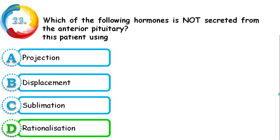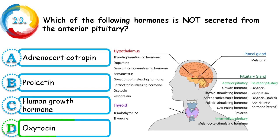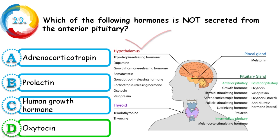Question 23: Which of the following hormones is not secreted from the anterior pituitary — adrenocorticotropin, prolactin, human growth hormone, or oxytocin? The correct answer is oxytocin, which is normally secreted by the hypothalamus. On the image you can see various glands and the hormones secreted by them — this is a highly important area.